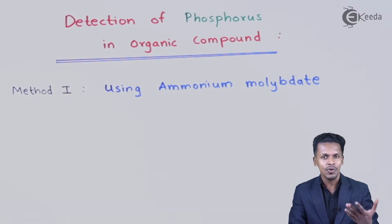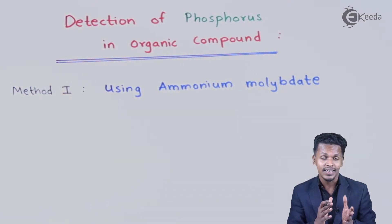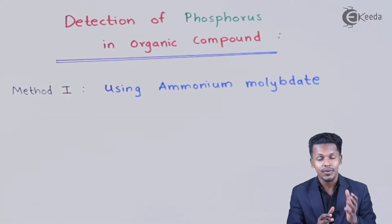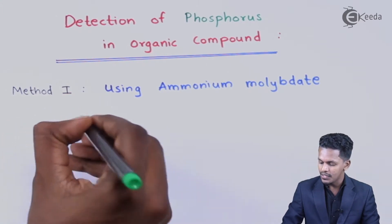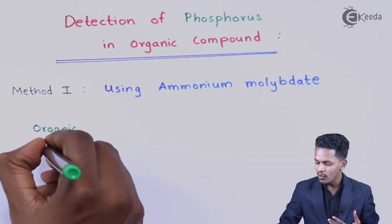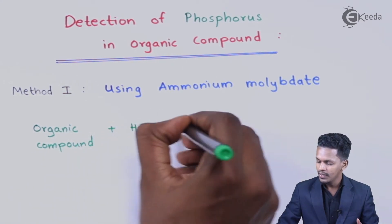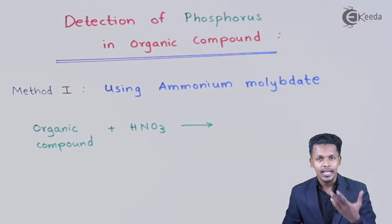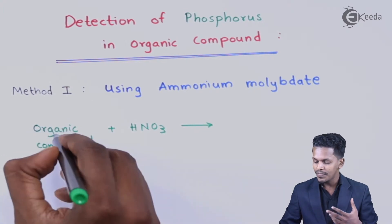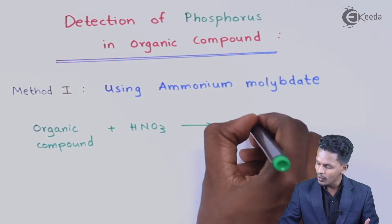The first step is to take the organic compound which we think consists of phosphorus — that is what we have to determine. Suppose we have an organic compound that consists of phosphorus. That organic compound is to be treated with fuming nitric acid, that is HNO3. If the organic compound consists of phosphorus, the product obtained will be phosphoric acid, H3PO4.